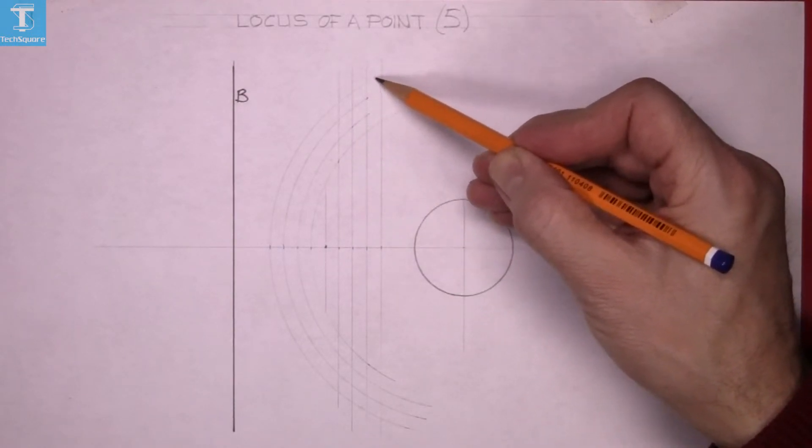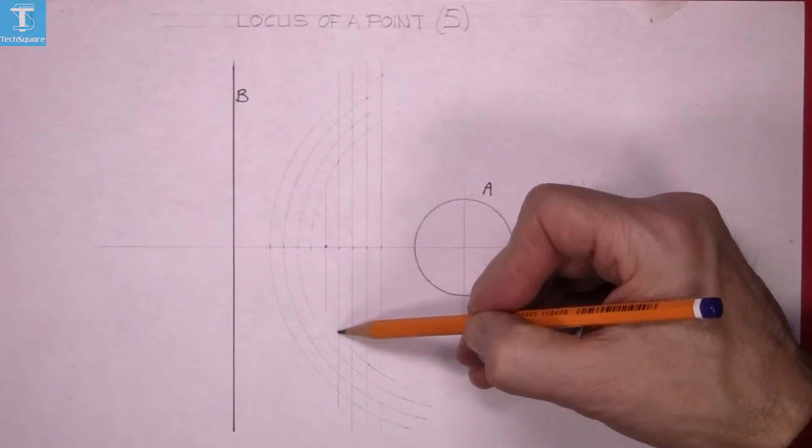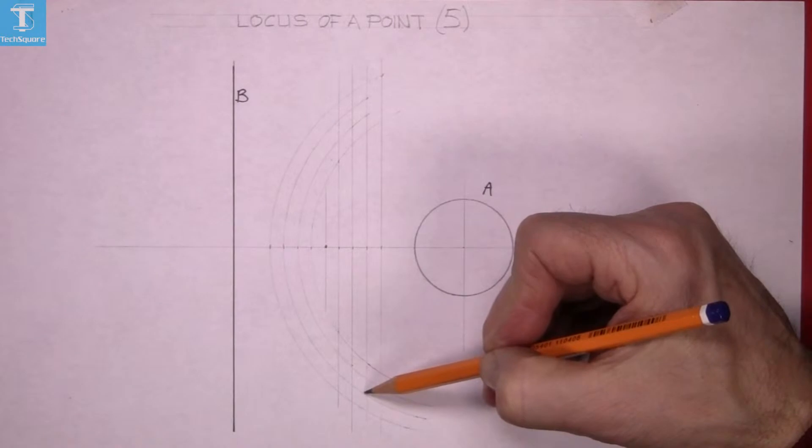That's the upper side of the locus. Now for the lower side, mark the points of intersection.